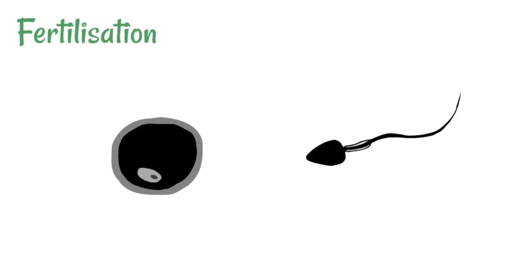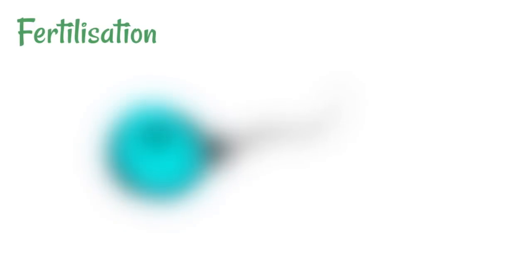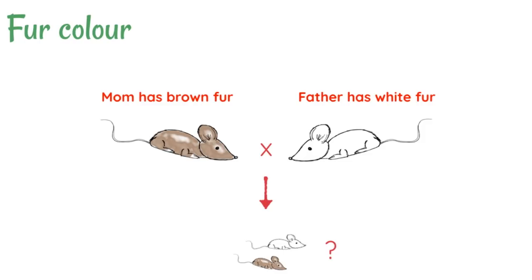During fertilisation, the nucleus of a sperm cell and the nucleus of an egg cell are going to fuse, and this is what produces new life. We're going to follow the example of inheriting fur colour in mice. We've got a mother mouse with brown fur and a father mouse with white fur. If they mate, they're going to produce offspring — and the question is, what fur colour would those offspring have?